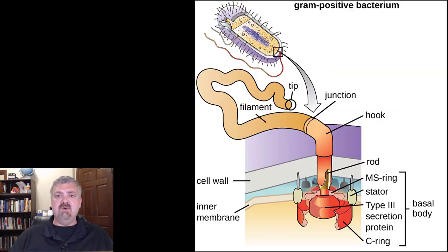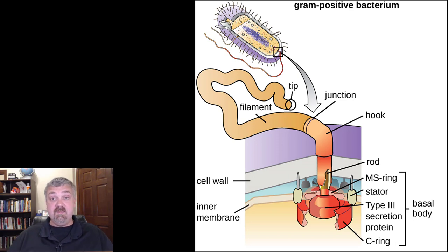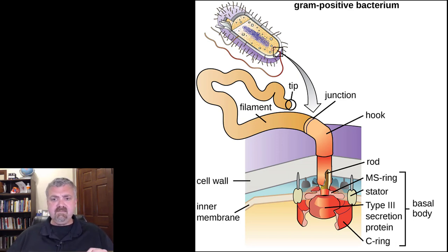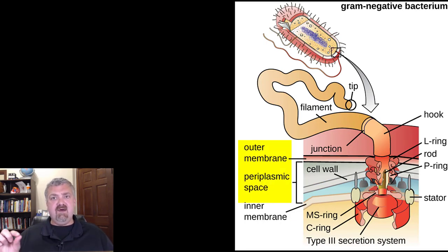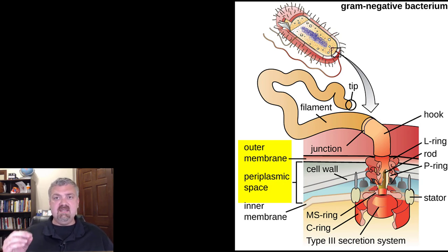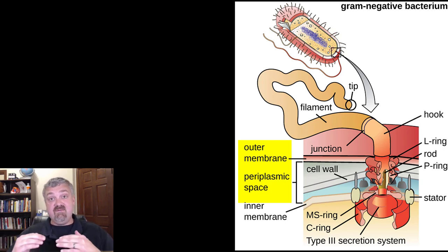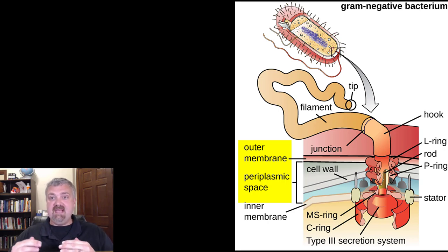Let me zoom in a bit closer. The gram-positive flagella is relatively straightforward because gram-positive bacteria just have that thick cell wall. Going to the gram-negative, you'll see there's the periplasmic space and then the outer membrane. So the gram-negative flagella is going to have a few more pieces because it has to travel through that outer membrane as well.